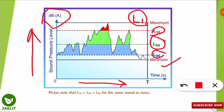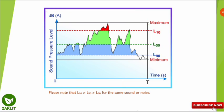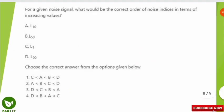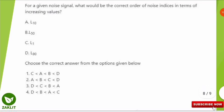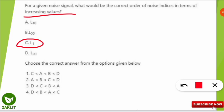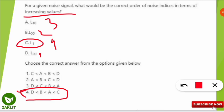To summarize: a smaller number after 'L' means a higher noise index value. So L1 has the maximum noise value, while L90 has the minimum. Since the question asks for increasing order, we go from lowest to highest: L90 first, then L50, then L10, then L1. Therefore, option number four is the correct answer.